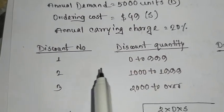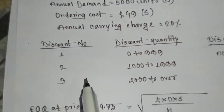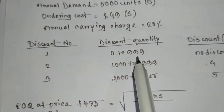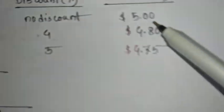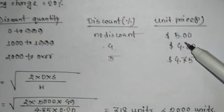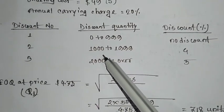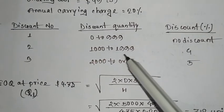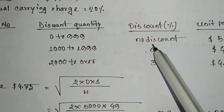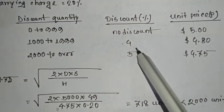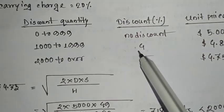Here we have a few discount scenarios. We have discounts numbered 1, 2, and 3. The discount quantity starts at 0. The first price is $5.00, and with a discount the price becomes $4.80, which represents a 4% discount.